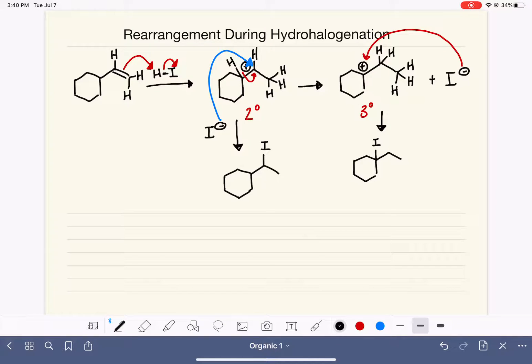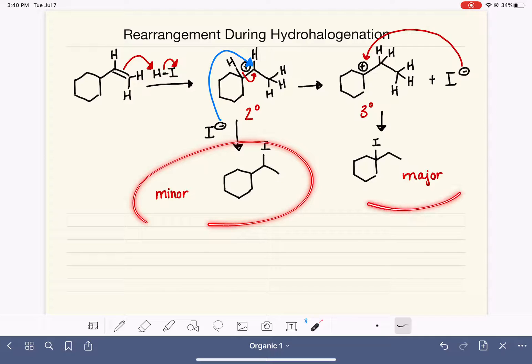Now, you're probably correctly assuming that the major product is coming from the most stable carbocation. And that is accurate. The minor product is coming from the carbocation that is less stable, that has not been rearranged. But we do see the formation of both of these products, so it's important that you list both of them.